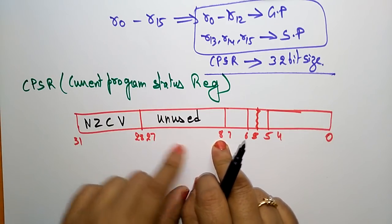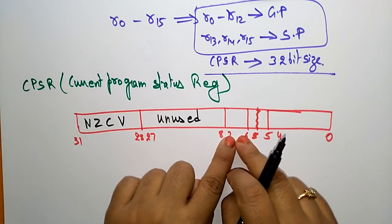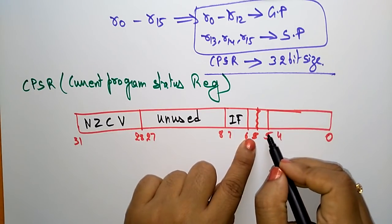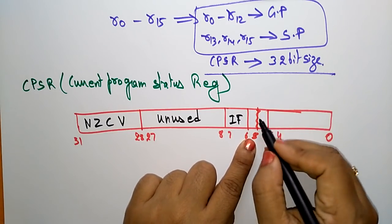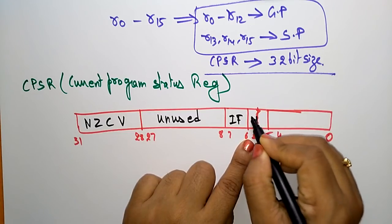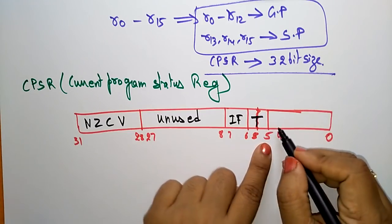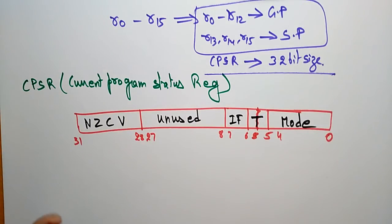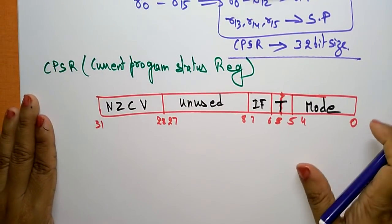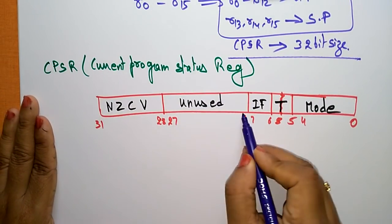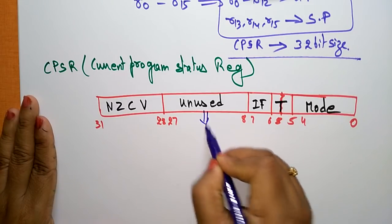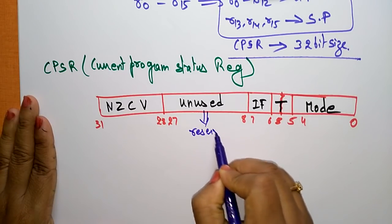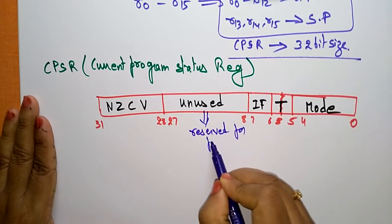Bit 7 consists of the I (interrupt) flag, bit 6 consists of T (Thumb), and the remaining lower bits represent the Mode field. Bits 27 to 8 are reserved for future purpose.